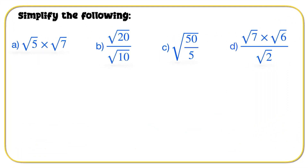Simplify the following — A, B, C, and D. Pause the video here, attempt the questions, and then I'll show you what I've got. Root 5 times root 7 can be written under the same radical, which is the square root of 35.